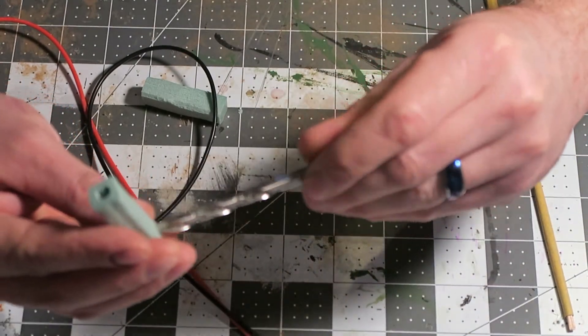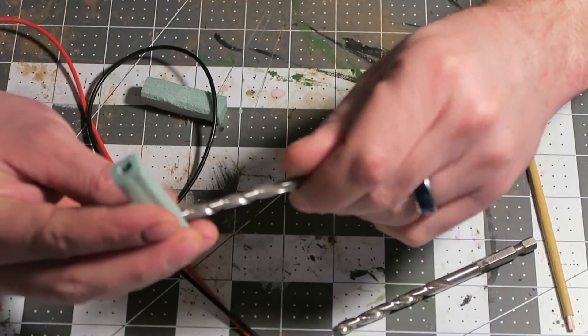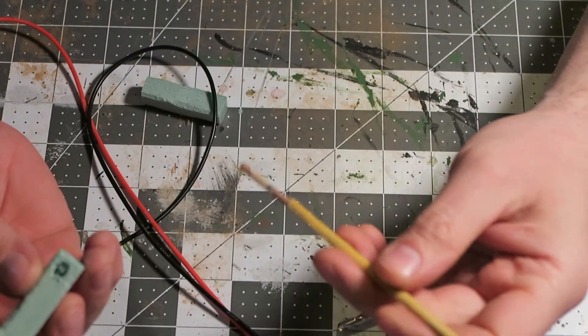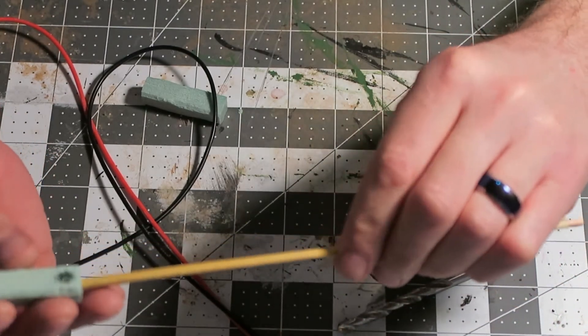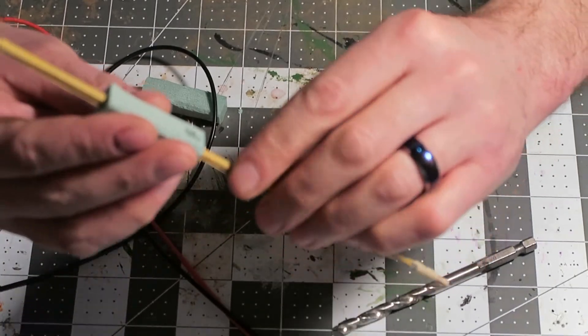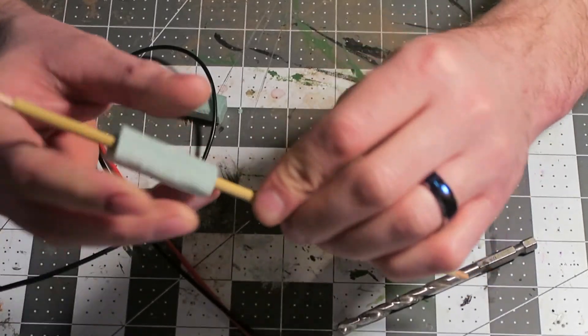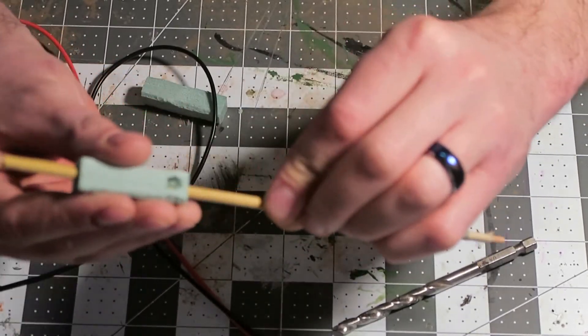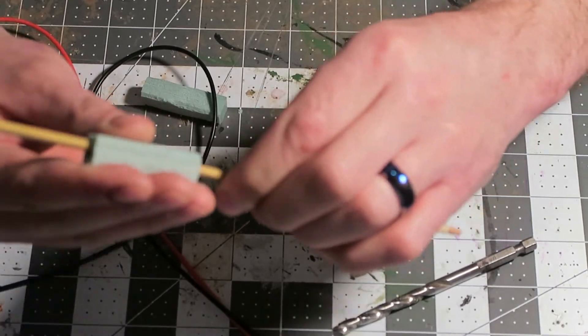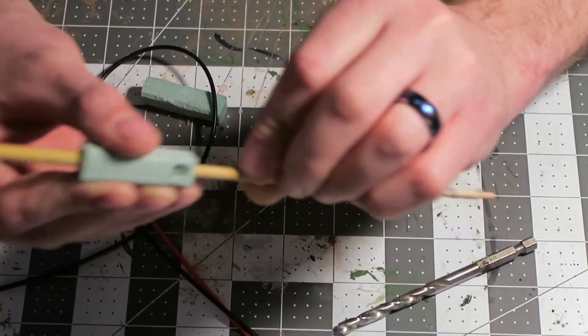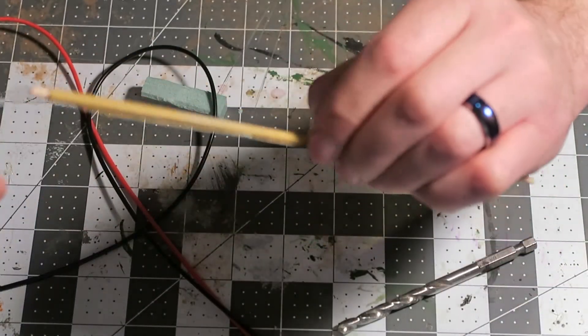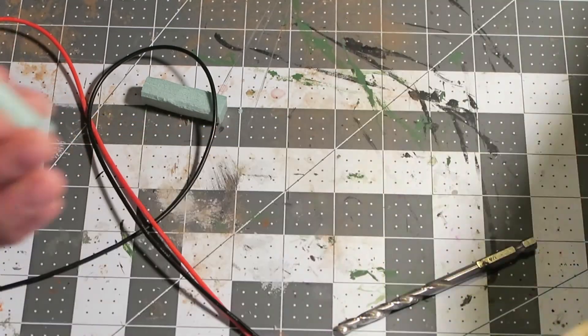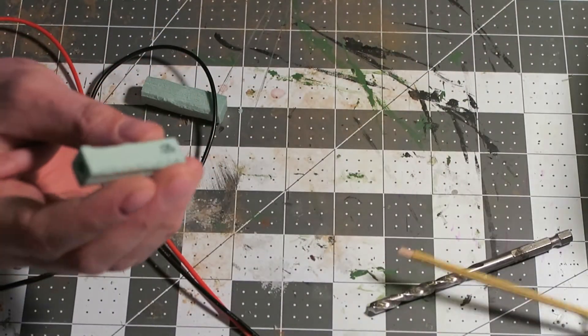I also have a filing stick that I made. It's just a barbecue skewer and some 220 sandpaper. I'm going to try to make this a little bit smoother for the wires to run through. They do get caught up in there and it's kind of a pain in the butt.